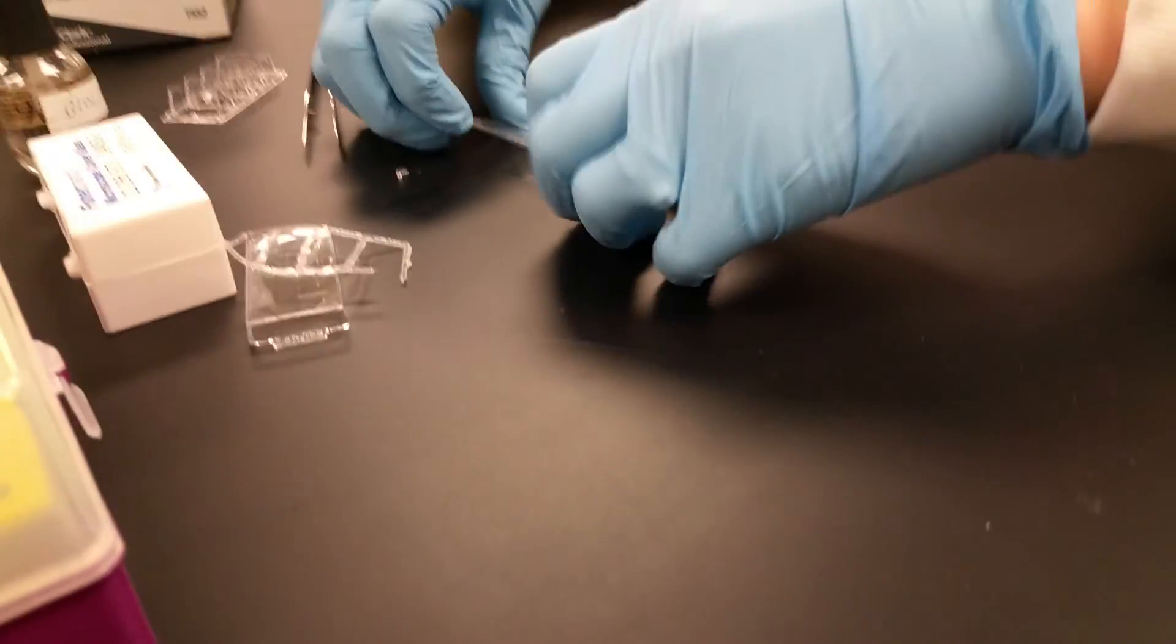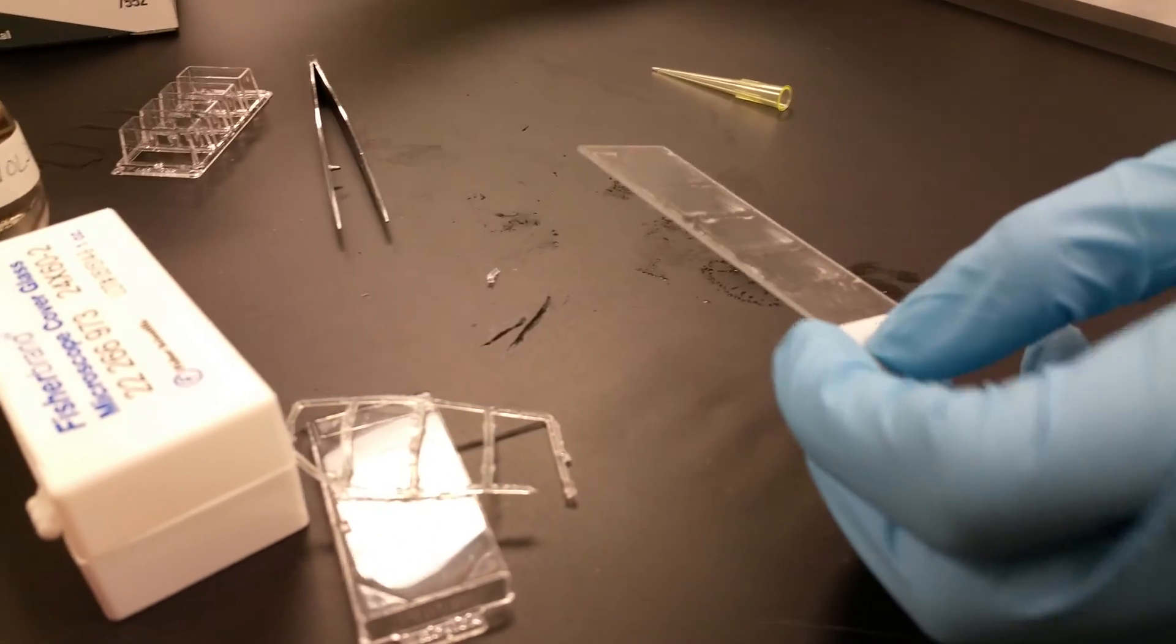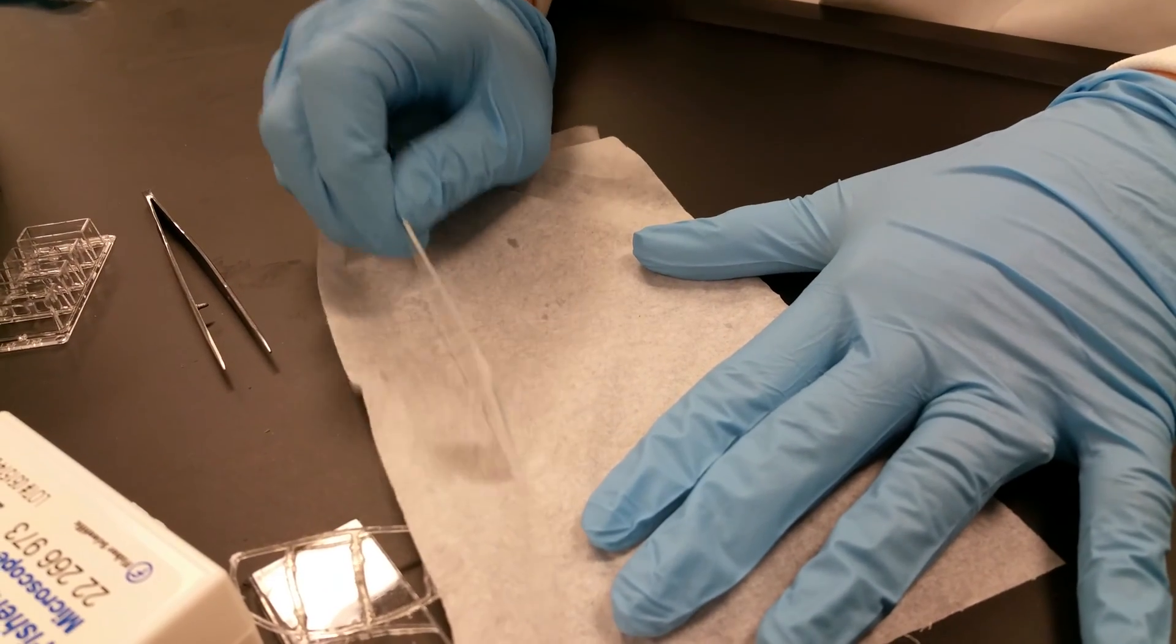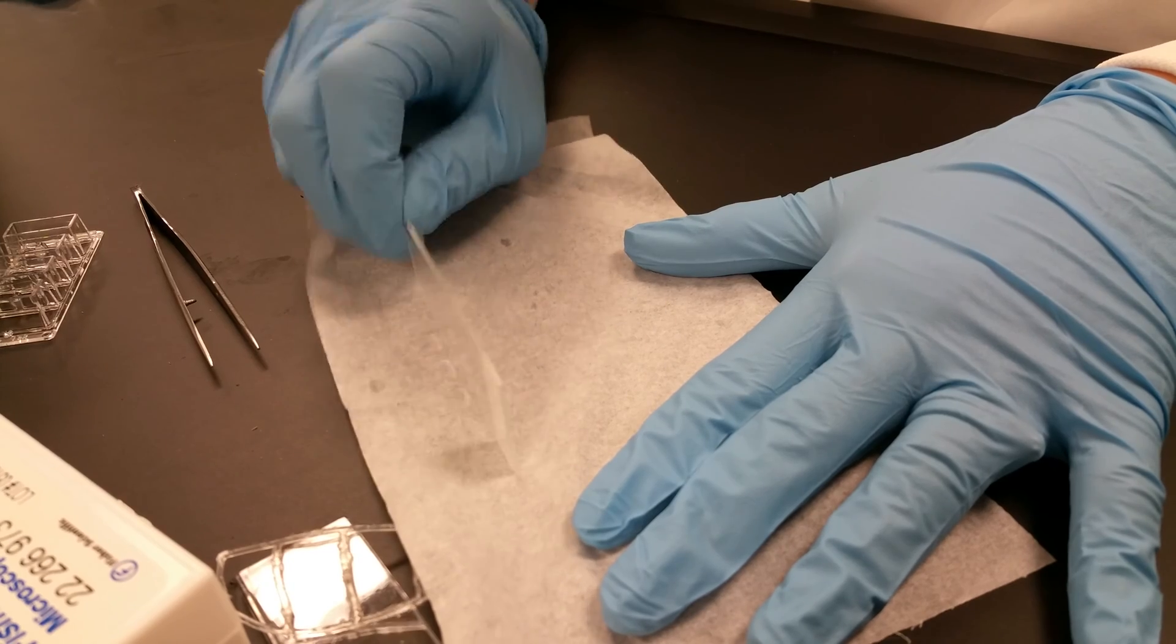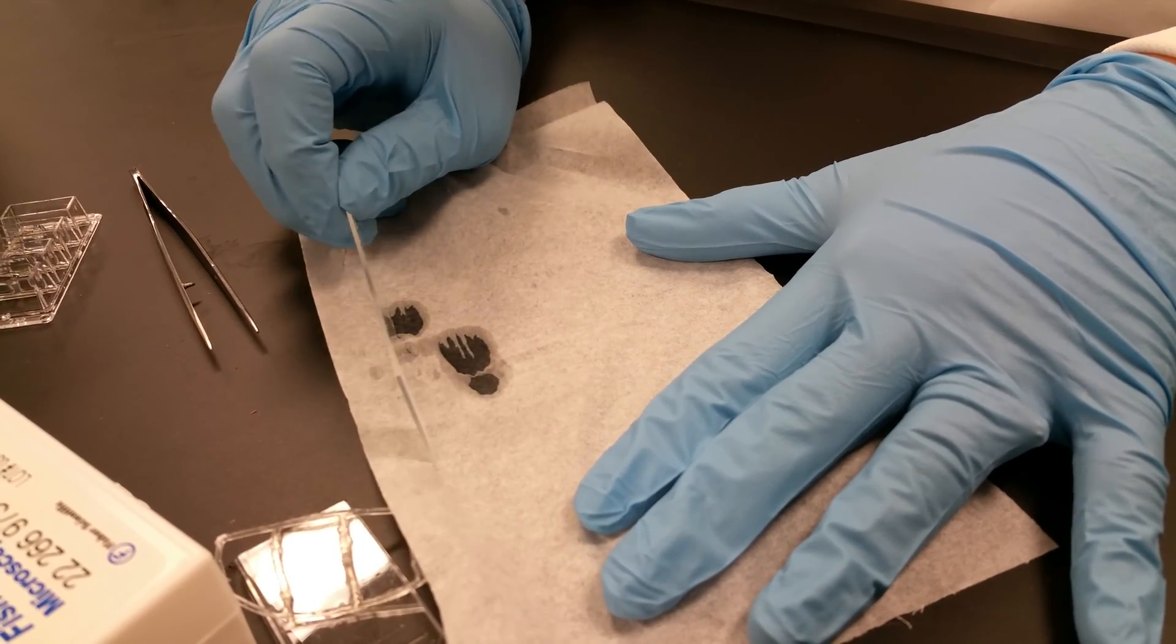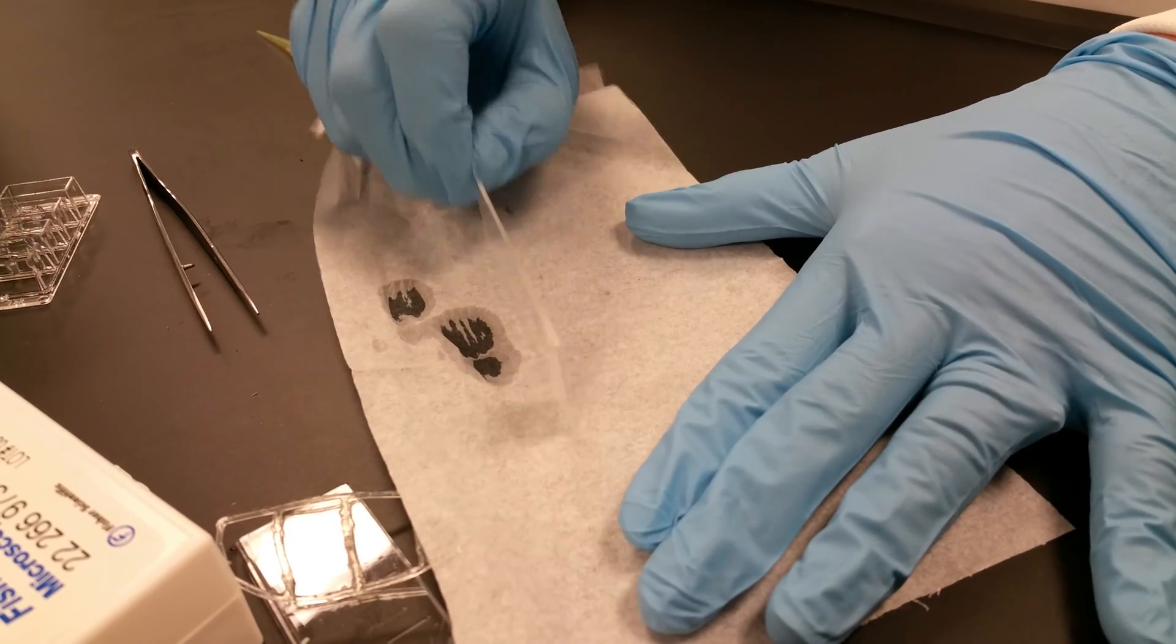Now we are almost ready to put the coverslip on. The last thing you want to do is blot off any excess liquid. You can do that just by tapping the slide on a chem wipe. You see how some of it is coming off? Just let this happen by capillary action. Don't do this because you don't want to wipe your cells off.